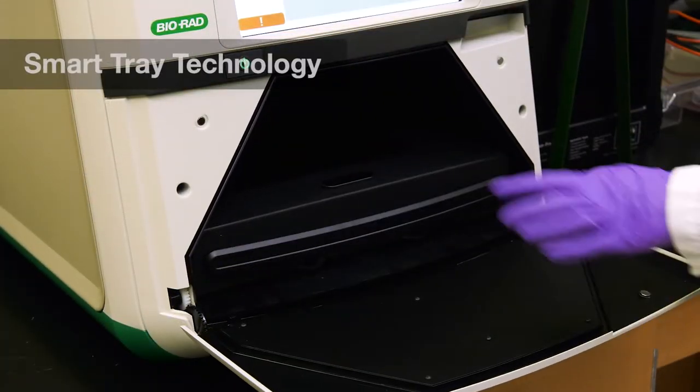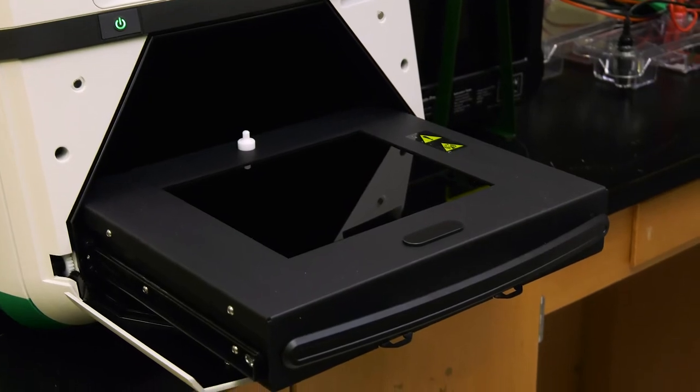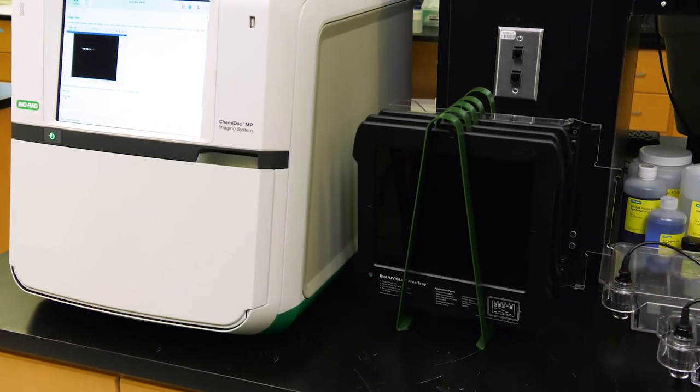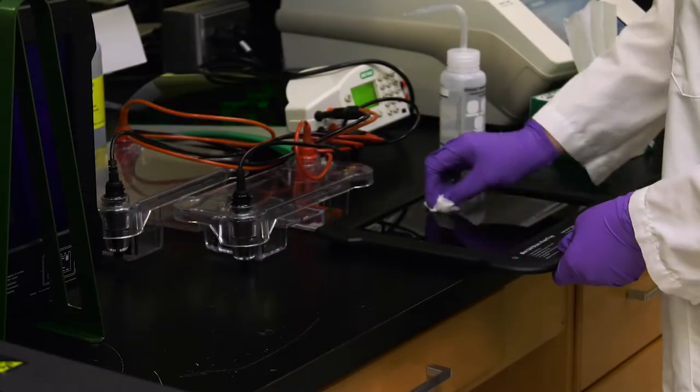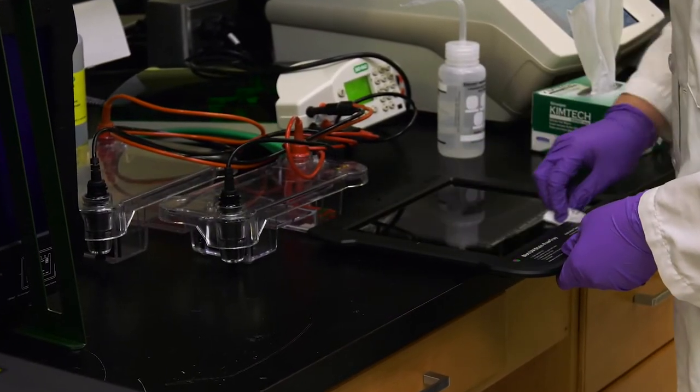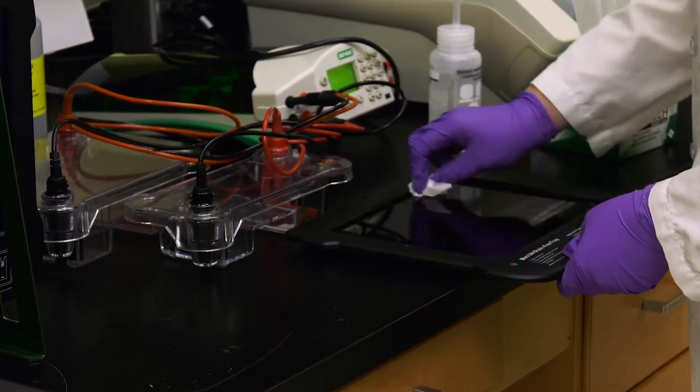To begin, open the imager and pull out the transilluminator. Note that all gels and blots will always be imaged on one of three trays. It is easy but important to clean the trays. Simply use DI water and a ChemWipe to ensure optimal performance.